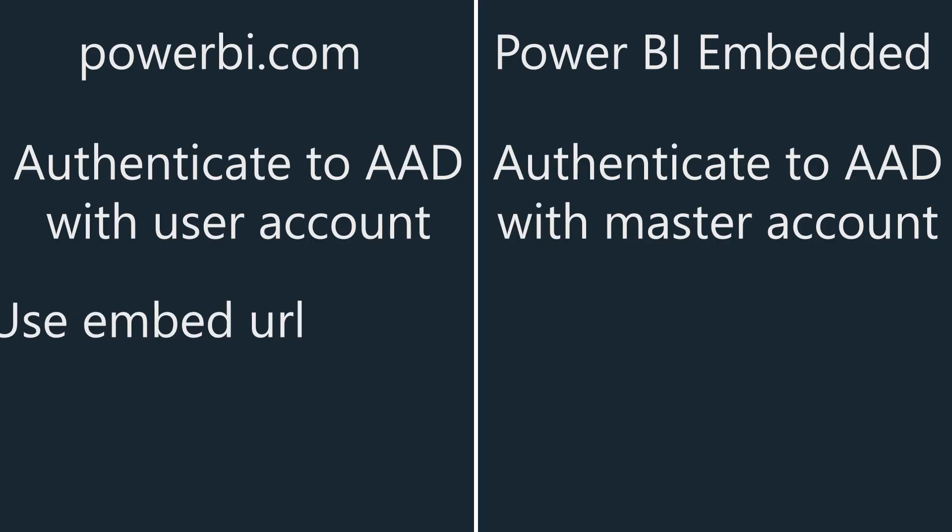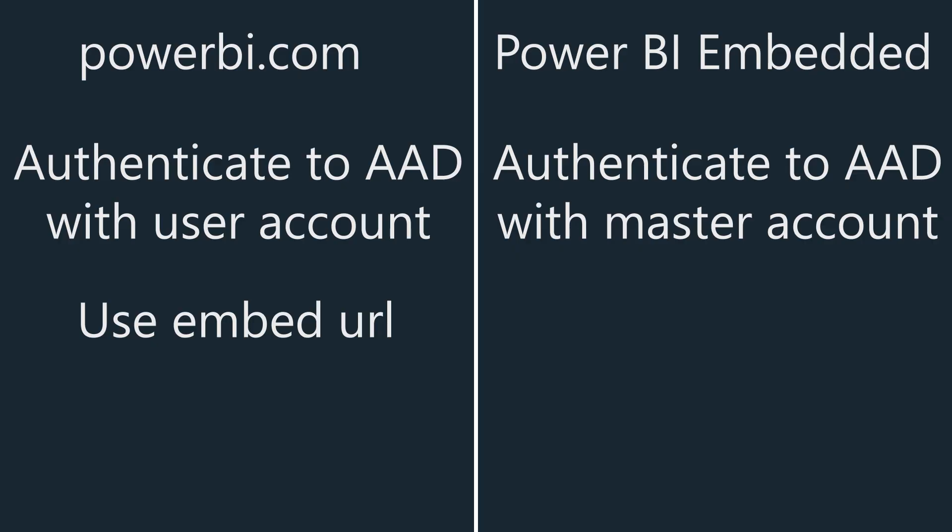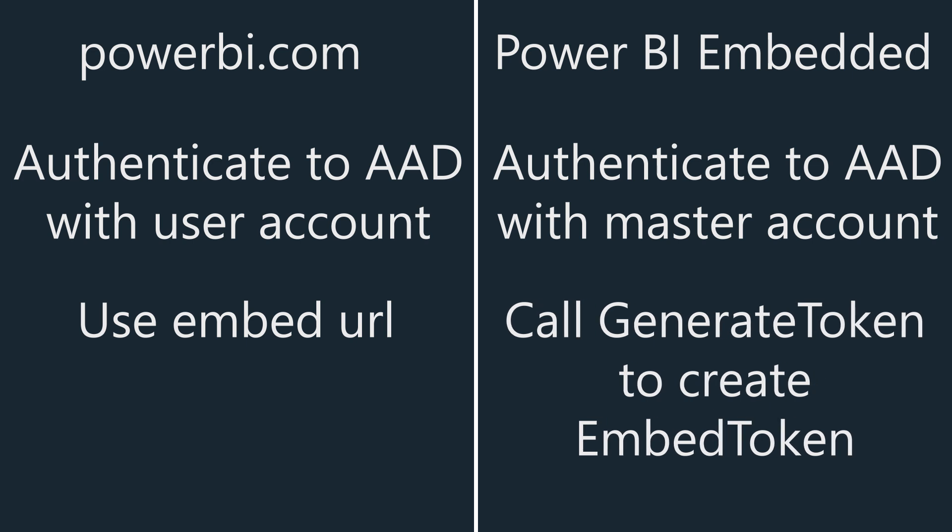Now that we have our auth token, we can make calls to the Power BI REST API. There is a .NET SDK available for Power BI, but if you're on another platform, you have to make raw REST API calls. An example would be a get report call — we get our report ID and an embed URL from the REST API response. For Power BI.com, we can just use that embed URL directly since the user has authenticated. For Power BI Embedded, the individual external user hasn't authenticated to Power BI, so we have to generate what's called an embed token using the Generate Token REST API. The embed token is then used with the JavaScript APIs to actually embed the report successfully.